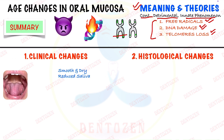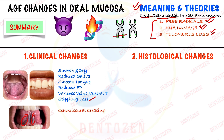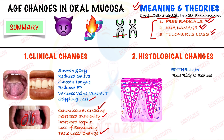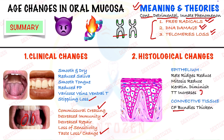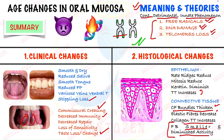Then write about the two types of changes in oral mucosa. Clinically: mucosa becomes smooth and dry, there is reduced saliva production and secretion, smooth tongue with reduced filiform papillae, lingual varices on the ventral surface of the tongue, loss of gingival stippling, creasing at the corners of the mouth, decreased immunity, decreased repair capacity, loss of sensitivity, and taste changes. Histologically — in the epithelium: reduction in rete ridges, reduced mitosis, decreased keratin formation, prolonged turnover time. In connective tissue: collagen fiber bundles thicken, elastic fibers decrease, collagen turnover time increases, and fibroblasts become smaller with diminished activity.